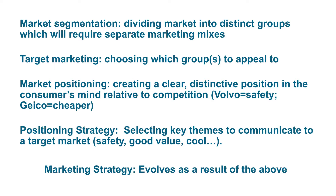For example, Volvo is positioned as being very high on safety, and Geico is positioned as very high on low price. We will discuss these terms later on, but it's important that we understand what they mean. Positioning strategy is when we select a specific key theme in order to communicate to the target market. Marketing strategy is basically a consequence that comes from all of these — STP: segmentation, targeting, and positioning.